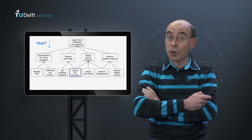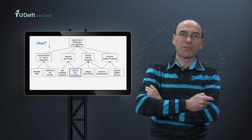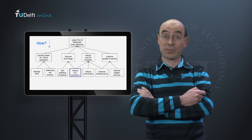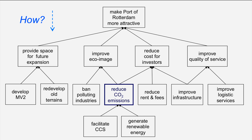It puts the issue of reducing CO2 emissions in perspective, and it may lead to a change of focus for your analysis. But for this example, let us assume that the focus remains on reducing CO2 emissions. So now you can continue asking how. The port could reduce CO2 emissions by creating facilities for carbon capture and storage, so that CO2 can be stored in, for example, depleted natural gas fields. The port could also increase the installed capacity for generating electricity from renewable sources such as wind or biomass. Evidently, you can continue in this way to elaborate the means-ends diagram in more detail.